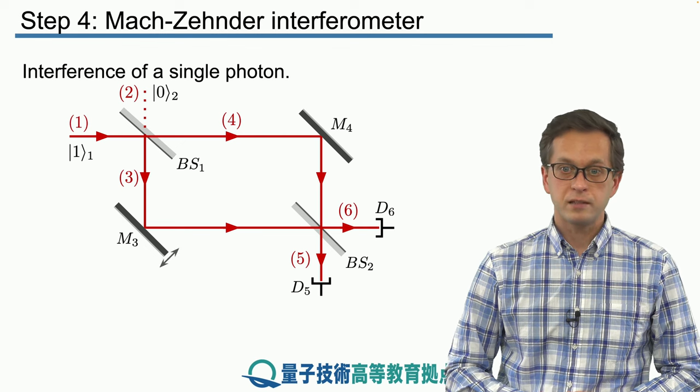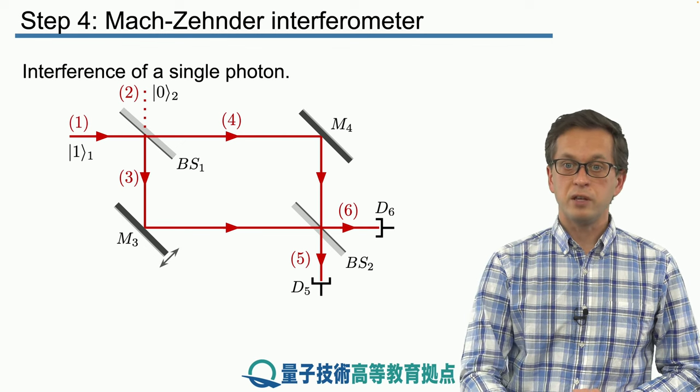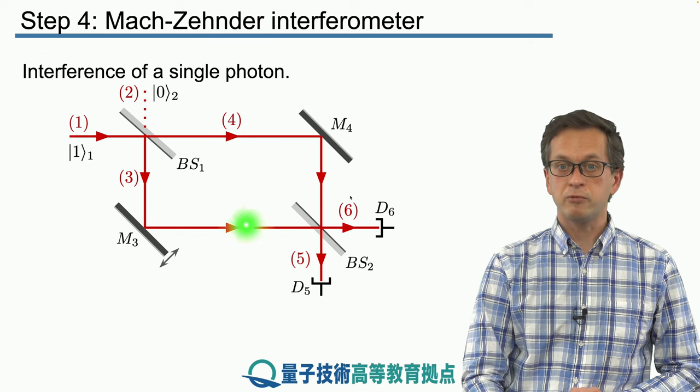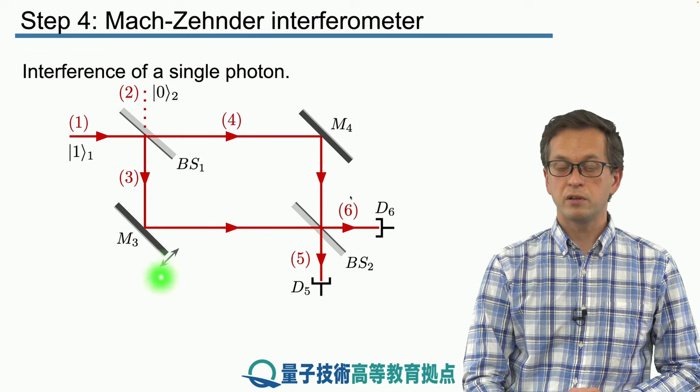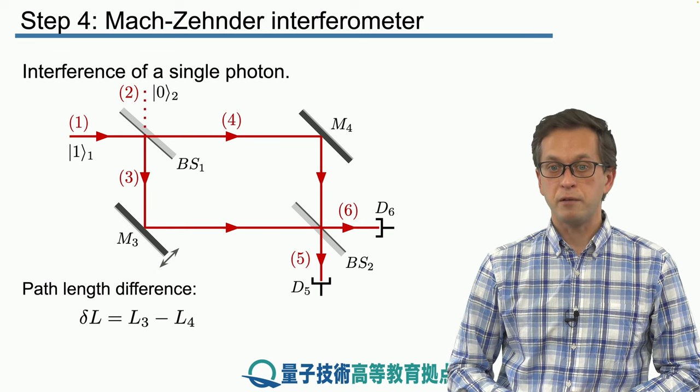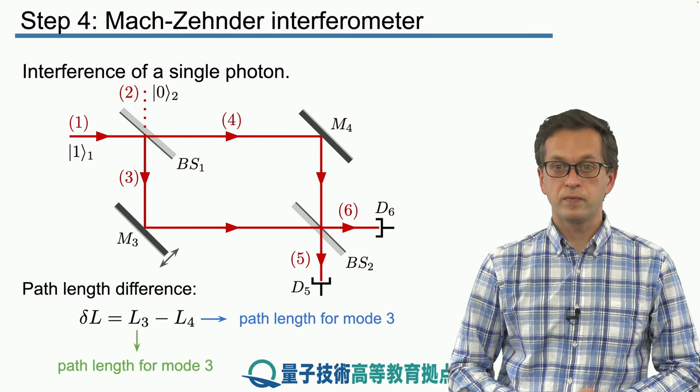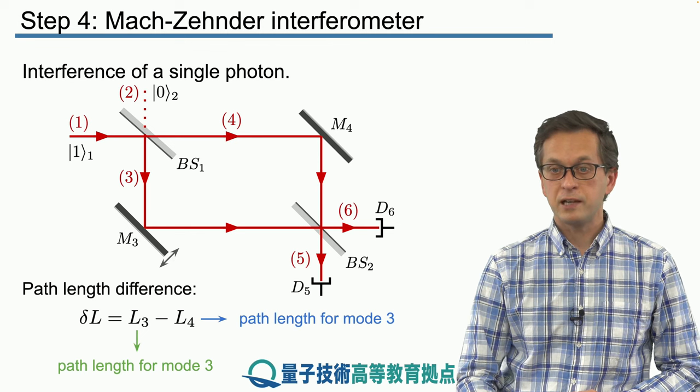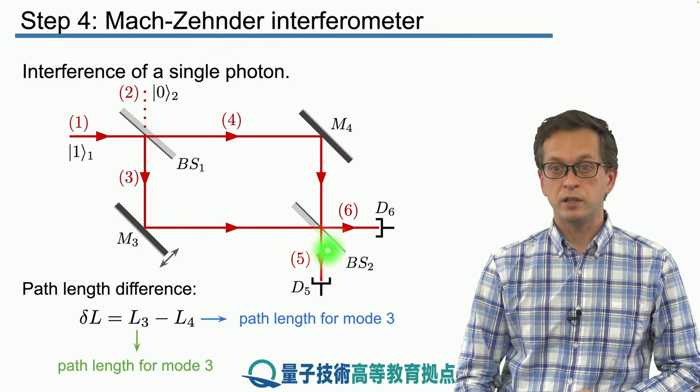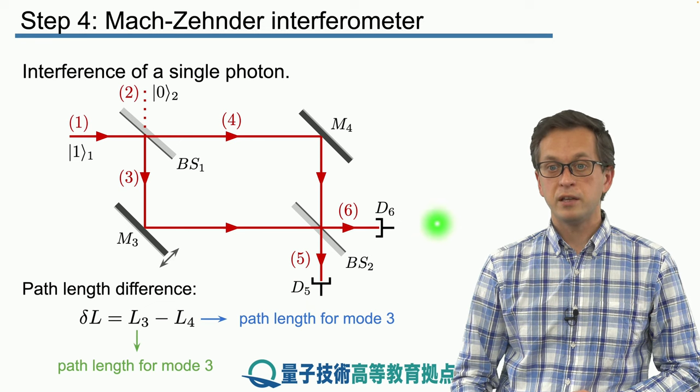We know from classical considerations that if we vary the length between the paths, in particular if we shift the position of this mirror, then this will introduce a path difference between L3 and L4. And what we see with classical light then are interference patterns at the detector D5 and the detector D6.